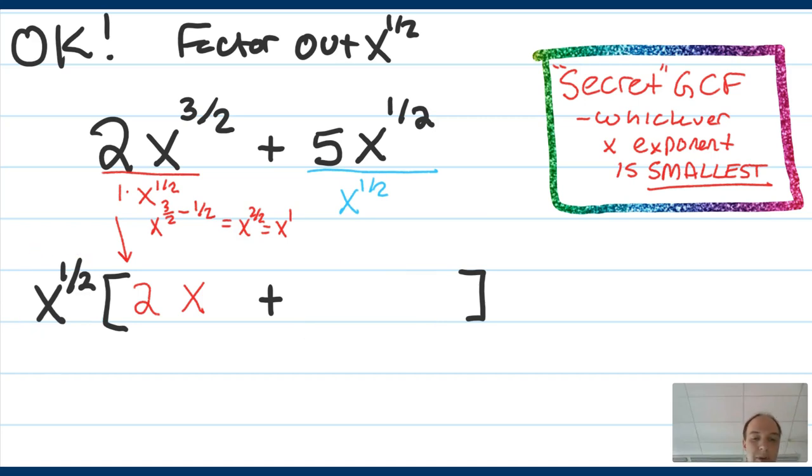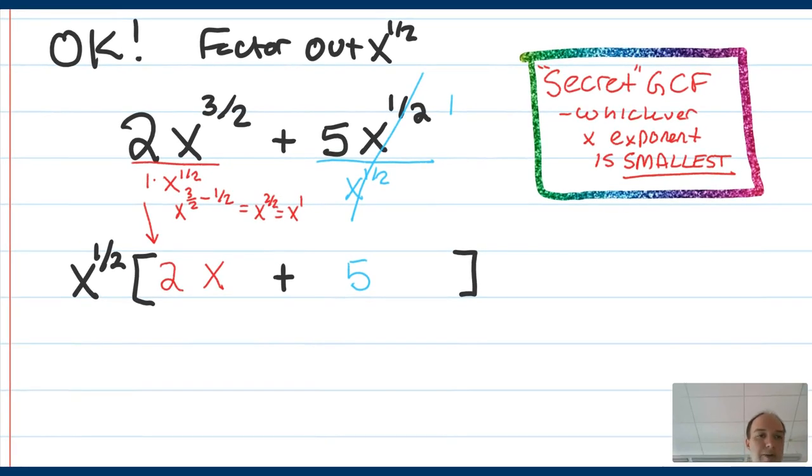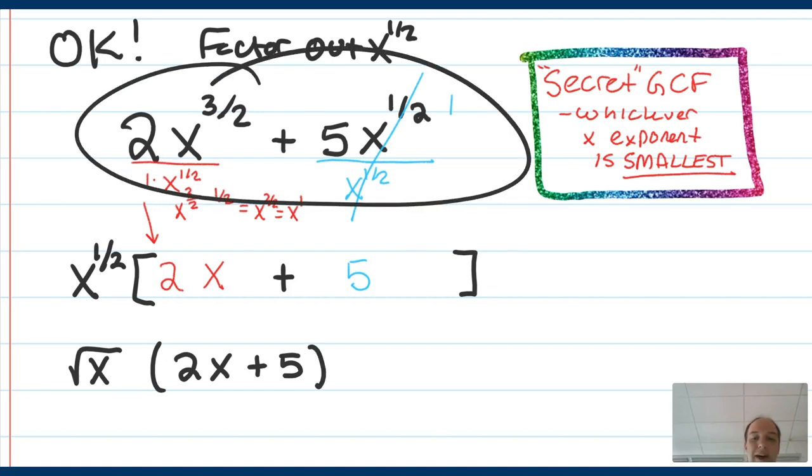So I divide this by this. Oh, well, this is just anything over itself that reduces to 1. And I have 5 times 1. So the second piece really is just 5. And wow, isn't that a lot nicer? I could even write this, I could write this in a couple different ways. I could leave it exactly as is. I could write this one half as root x if I wanted to. And it could be something like root x times the quantity 2x plus 5.